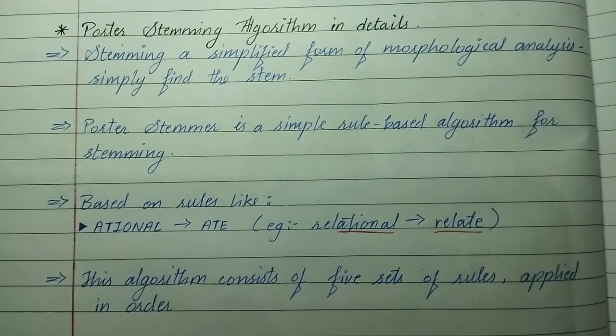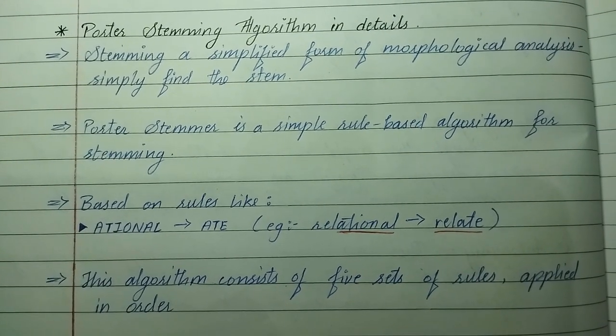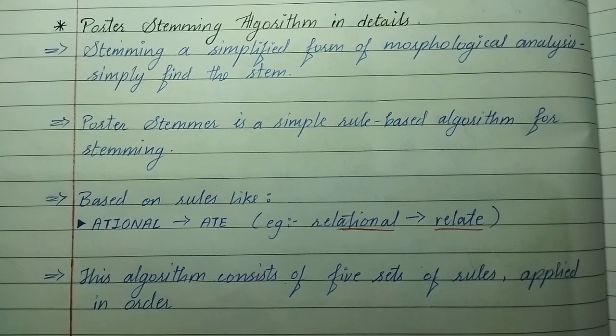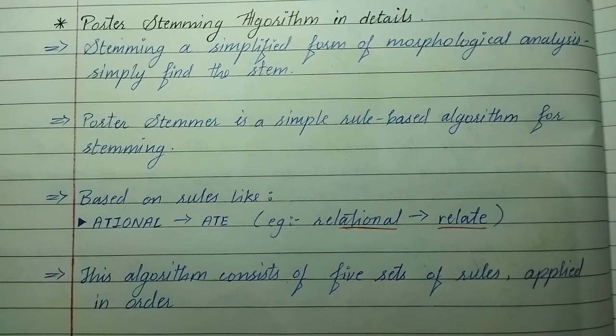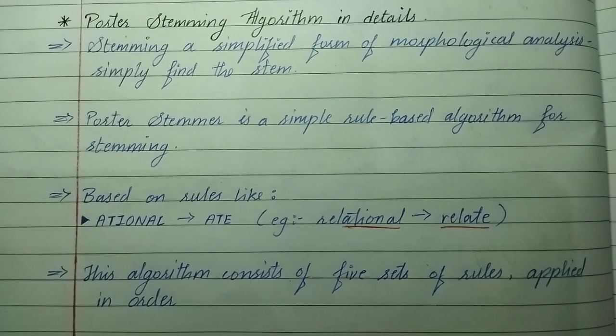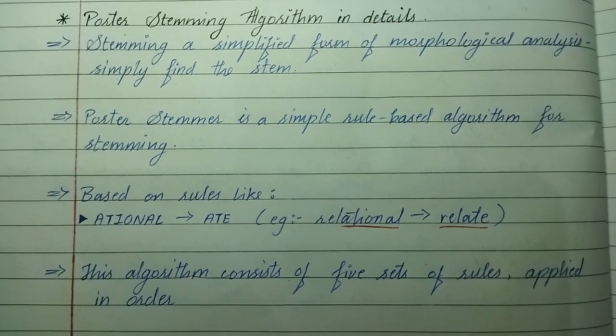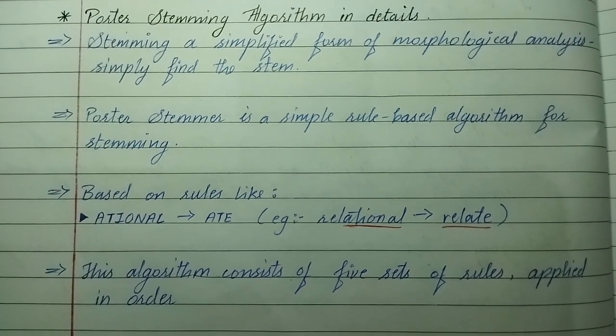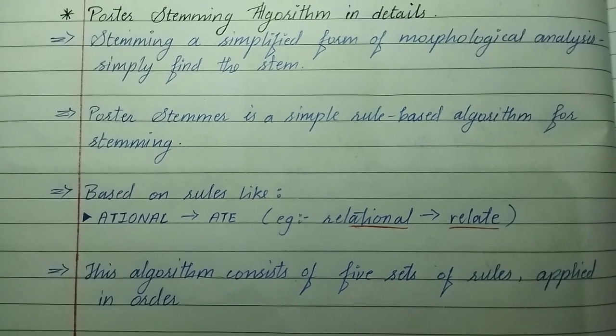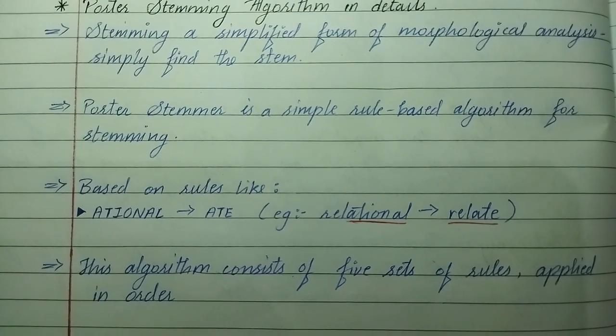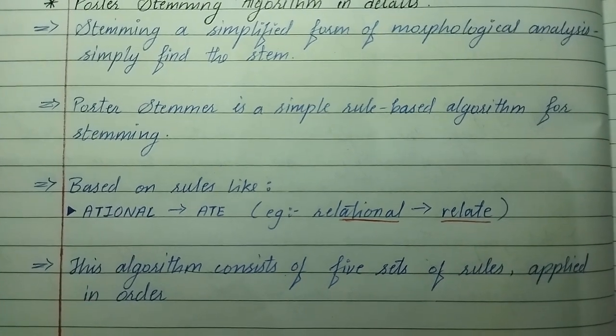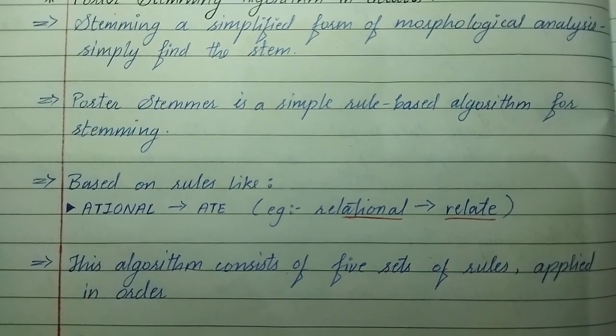Hello guys, welcome back to On Time Notes. In this video we are going to cover Porter Stemming Algorithm in details. Stemming is a simplified form of morphological analysis—simply finding the stem. Porter Stemmer is a simple rule-based algorithm for stemming based on rules like relational relates to relate.